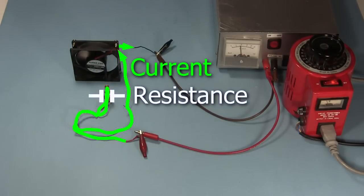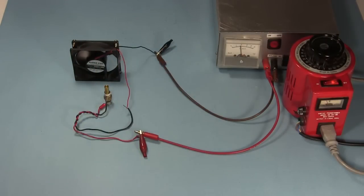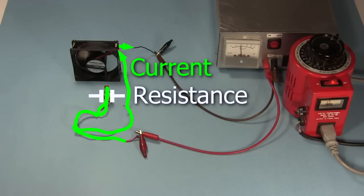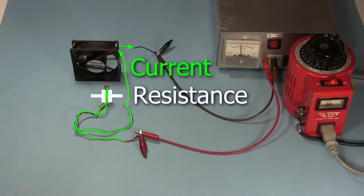Notice that the fan is blowing on the thermistor, making it cool off more quickly. Here I'm showing the airflow direction using this tissue paper. As the thermistor cools, its resistance increases, and that causes the current going through the fan to decrease. After a minute or so, the current is too low to keep the fan spinning, so it stops.